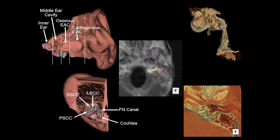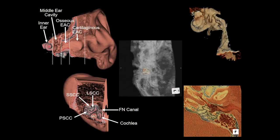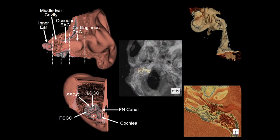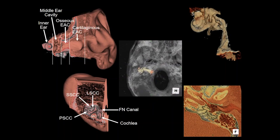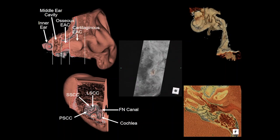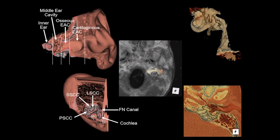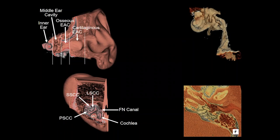The temporal bone is considered to be a complex anatomical structure, perhaps related to the presence of multiple small sub-centimeter structures which live in a very small compact area, making it difficult to appreciate the three-dimensional orientation of these various structures and therefore their relationship to each other and the underlying anatomy.